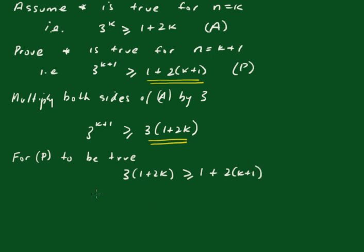That is, 3 times 1 plus 2k minus 1 minus 2 times k plus 1 has got to be greater than or equal to 0.